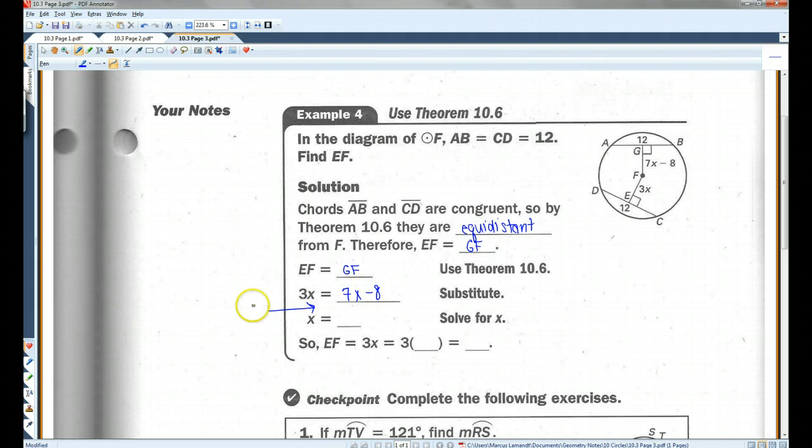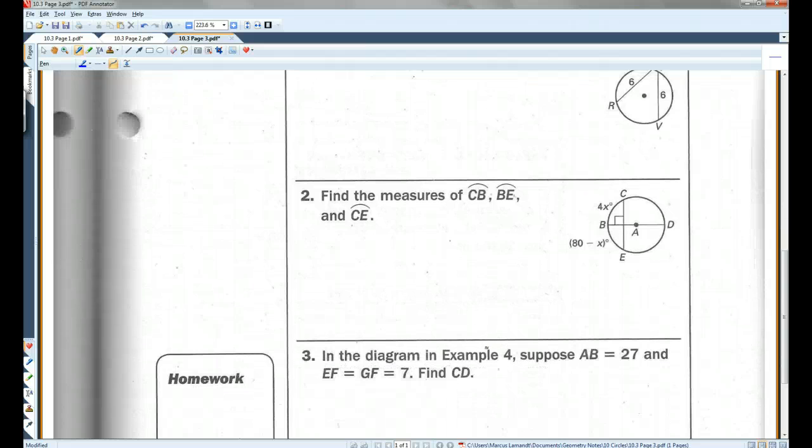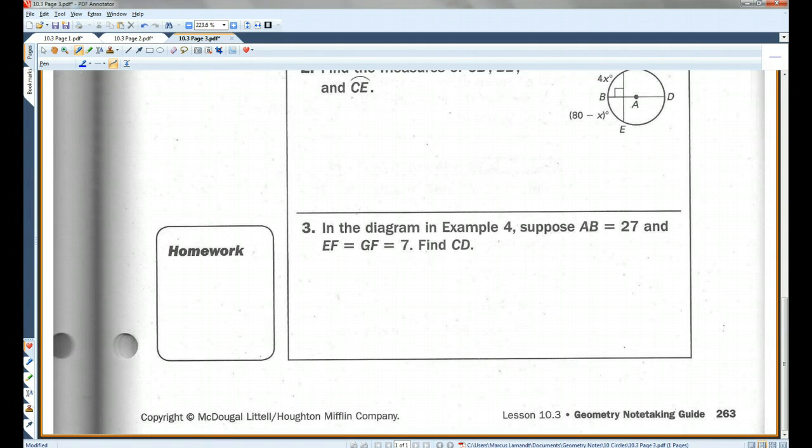I'm going to add a few steps. Let's subtract 7X from both sides. So I'm going to get negative 4X equals negative 8. Divide by negative 4. X equals 2. So EF equals 3X, or 3 times 2, which is 6. Alright, and you guys can do the checkpoint. That's all.